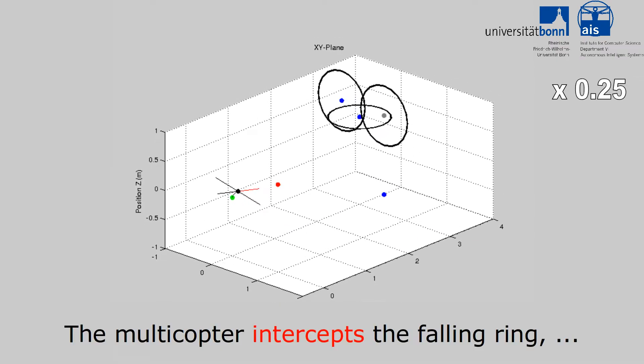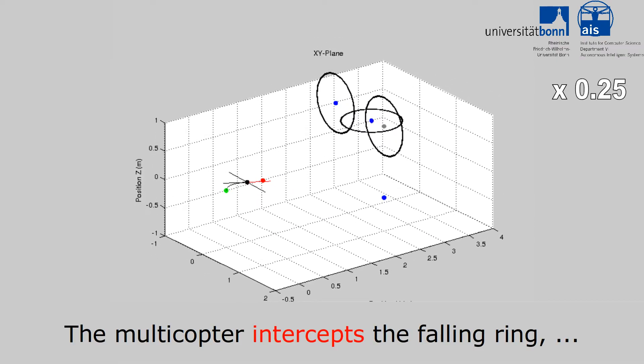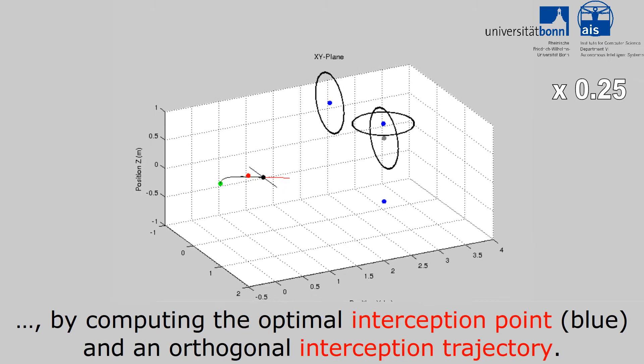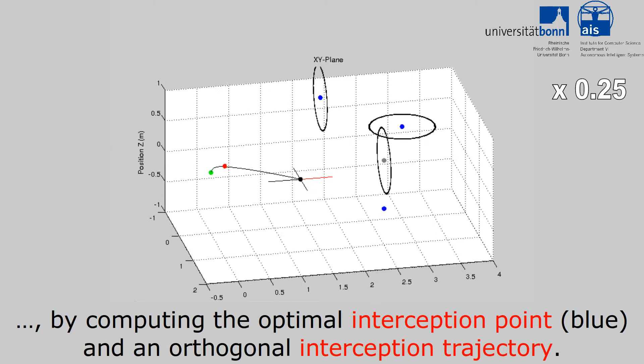The multi-rotor intercepts the falling ring by computing the optimal interception point and an orthogonal interception trajectory.